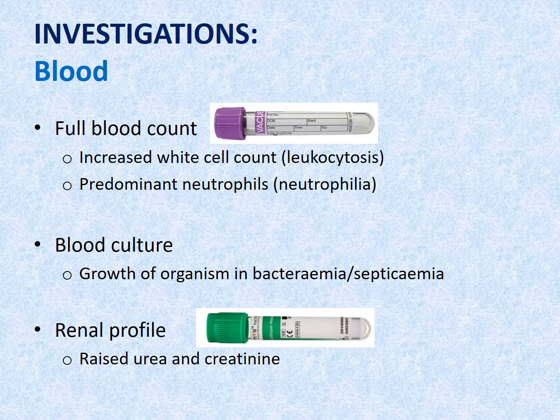Blood investigations are indicated in young children with UTI or if there are clinical features suggestive of pyelonephritis. Older children with symptoms of cystitis but otherwise well generally do not require blood investigations. Investigations that should be sent include full blood count, blood culture, and renal profile. Full blood count may show leukocytosis with neutrophilia. In pyelonephritis complicated by bacteremia or septicemia, blood culture may reveal the causative organism. Renal profile is important to rule out renal impairment, a known long-term complication.